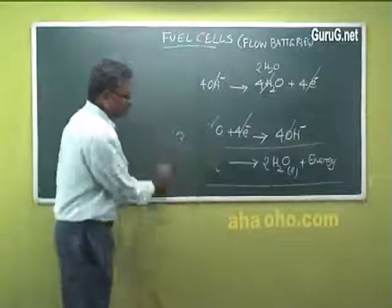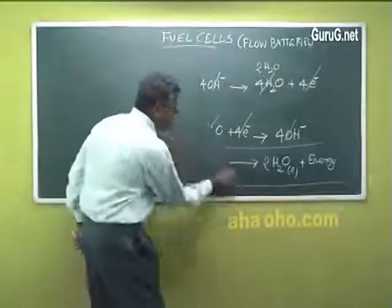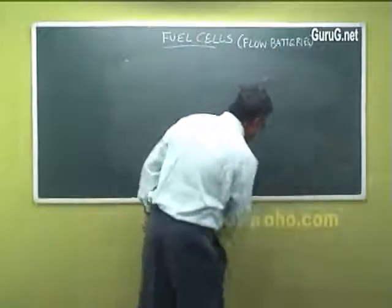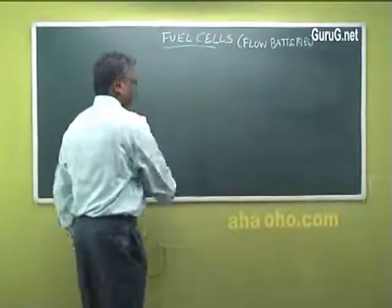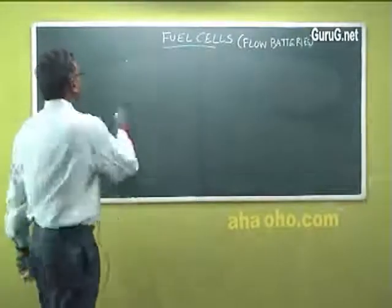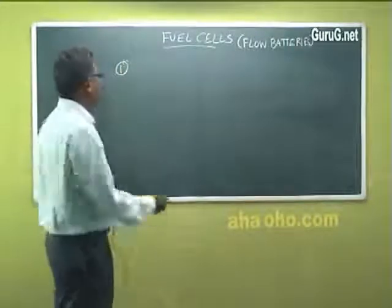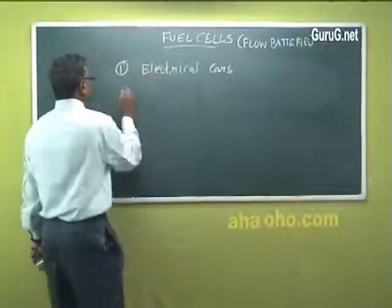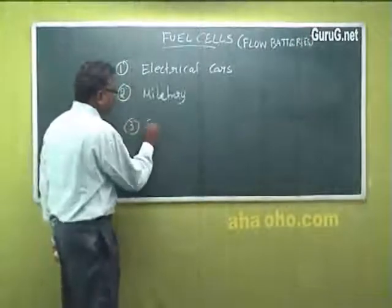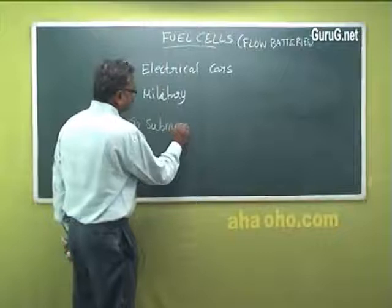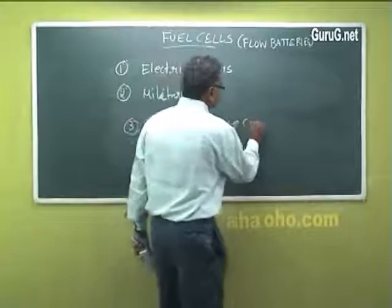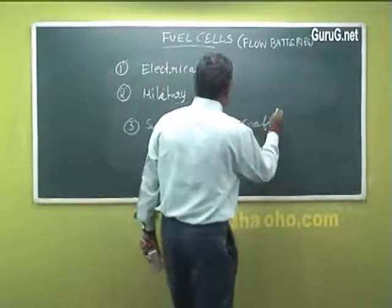The voltage that we get out of this fuel cell is around 1.23 volts and it has great advantages and applications. The important application is this can be used in electrical cars. Number two, they are used in military purposes, they are used in submarines, spacecrafts, etc.